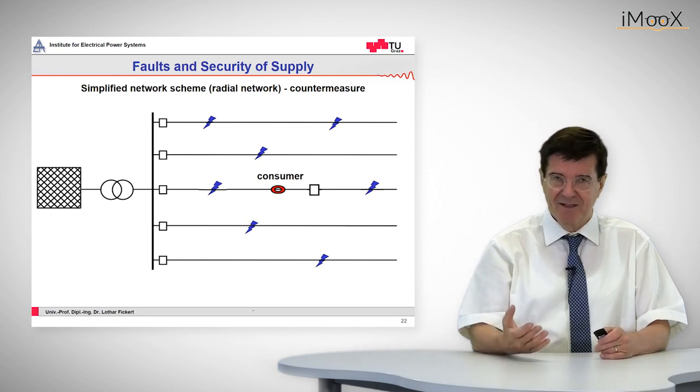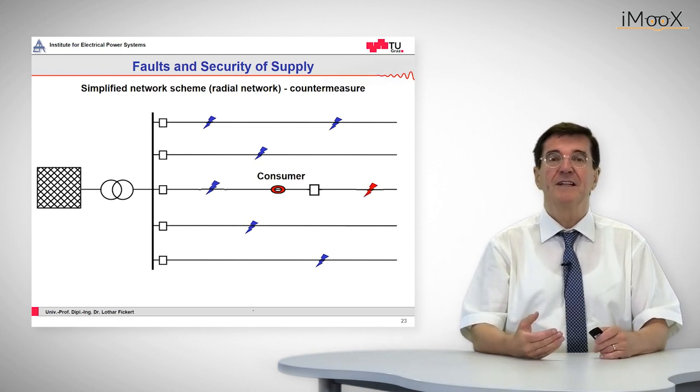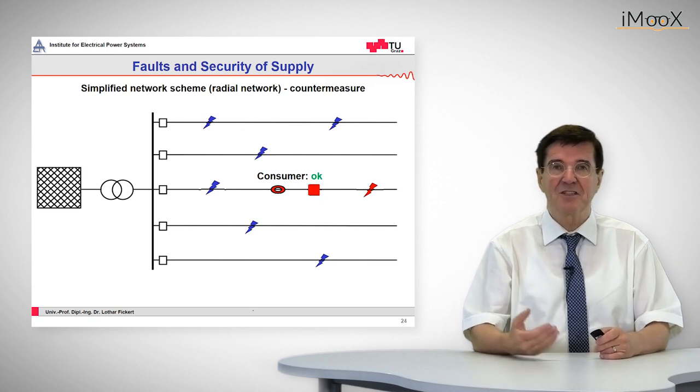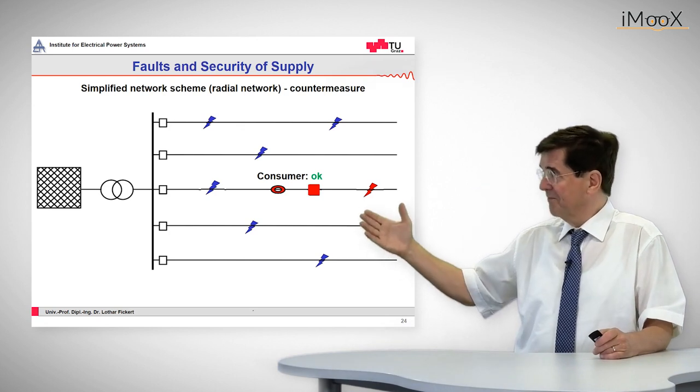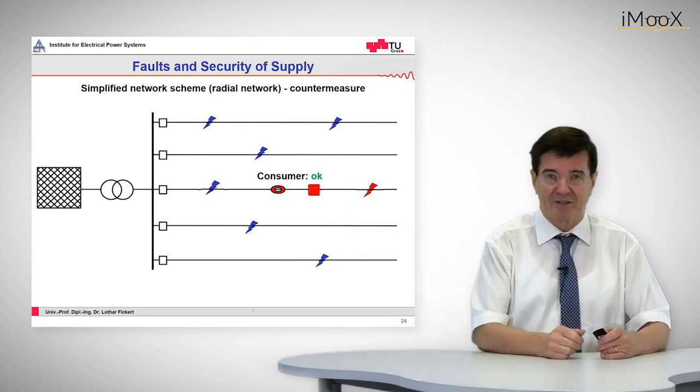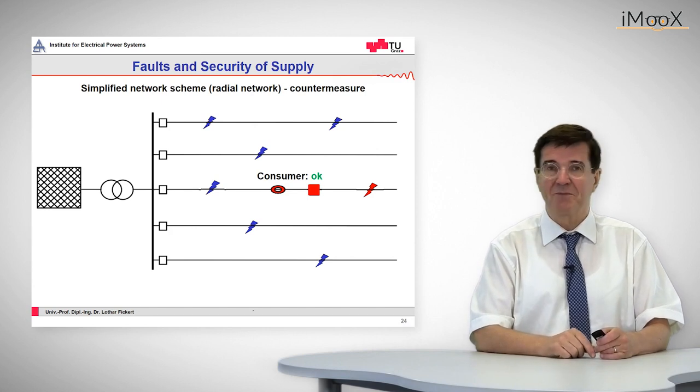Now let's play the same procedure again. The fault occurs, is detected by the protection downstream and tripped out. That means the supply from the source to the consumer is not interrupted. The consumer has experienced a little voltage dip but not more.